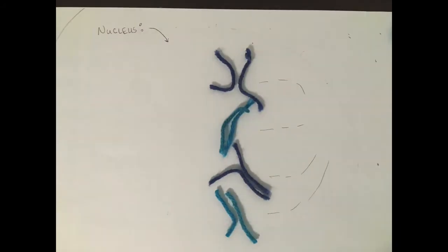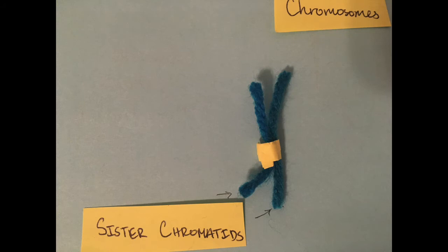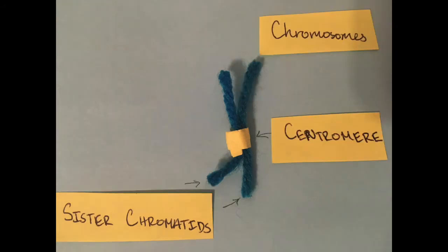The next step is metaphase, where the chromosomes align themselves in the center. But what is a chromosome? A chromosome is a structure of two identical sister chromatids connected in the center by a centromere.